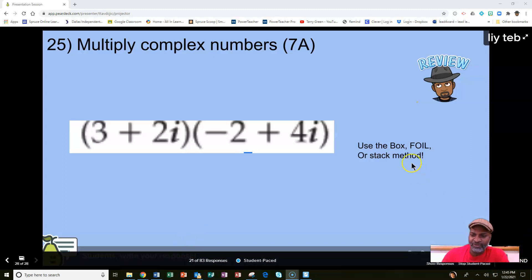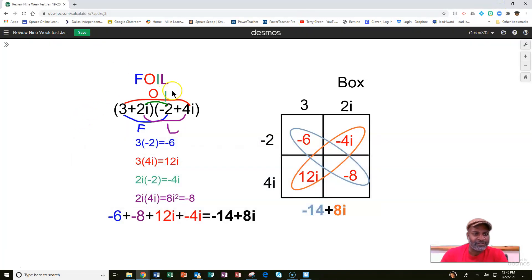So we can use the box method or the FOIL method and I'll just review those very quickly on this slide here. So on the left we have the FOIL method which stands for first, outside, inside, and last.